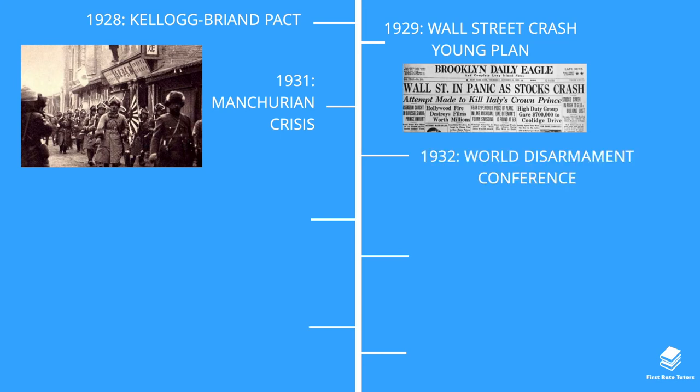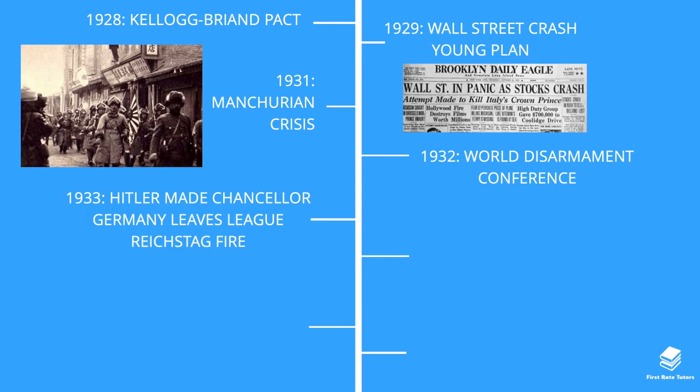In 1932 there was the World Disarmament Conference, held to try and secure world peace. However, in 1933 Hitler had been made Chancellor in Germany and he decided to leave the League. He also used the Reichstag fire as a pretext to consolidate power.